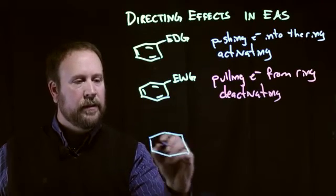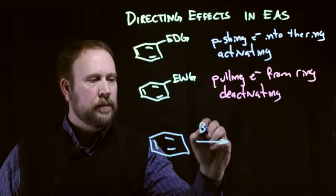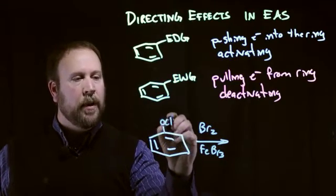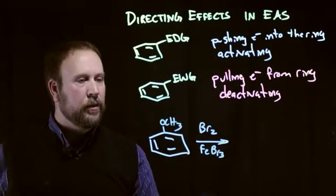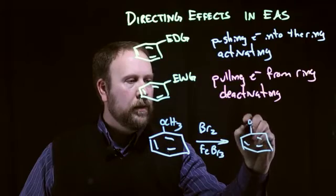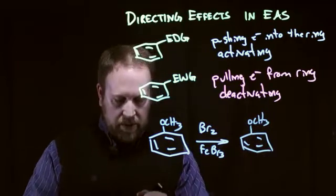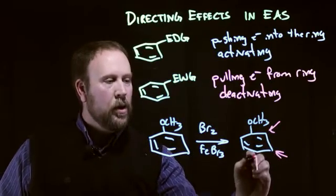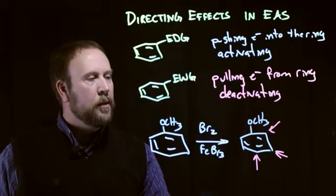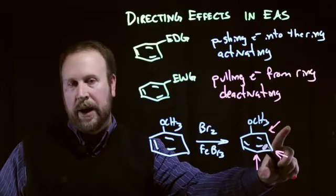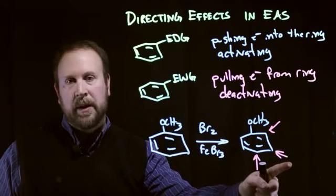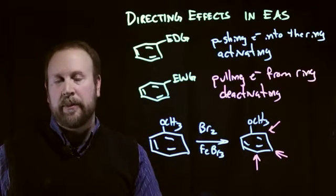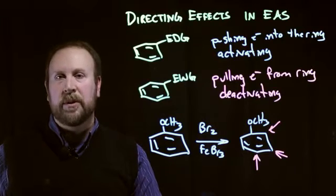If we look at a sample reaction, we want to be able to explain, when we have some kind of a directing group, why we see the regiochemistry that we do. We have three different choices: we could add that bromine to the ortho position, the meta position, or the para position. Groups can be directing to either the ortho and para positions, or they can be directing to the meta position. Next, we'll look at an example electron-donating group, and then finish by looking at an example electron-withdrawing group.